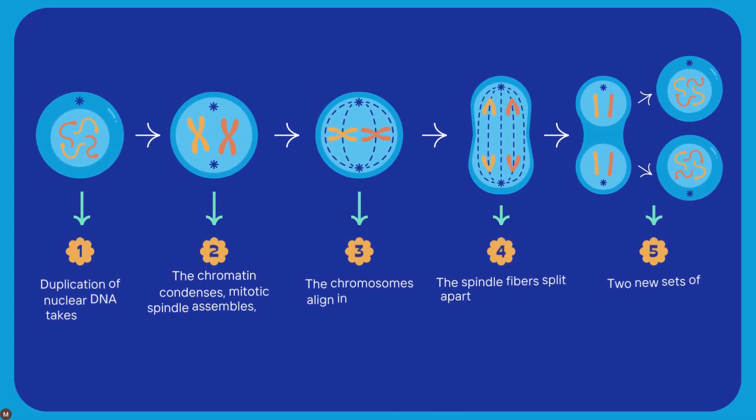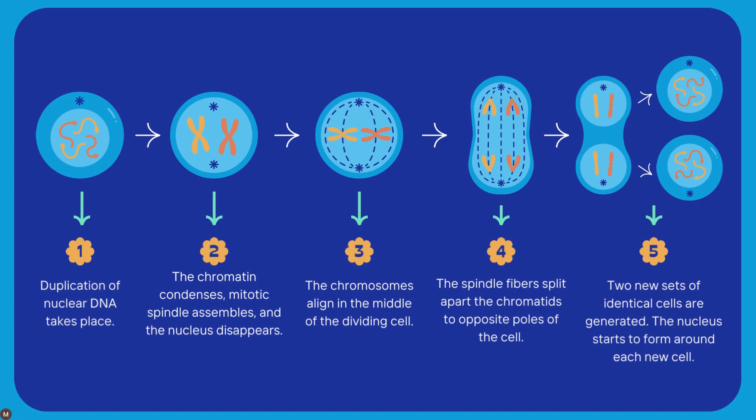Now that DNA has been replicated in the interphase of cell division, we can get right into mitosis. I like to tell my students to remember PMAT — P-M-A-T. It's an acronym that helps you remember the sequence of stages occurring in mitosis: P for prophase, M for metaphase, A for anaphase, and T for telophase.